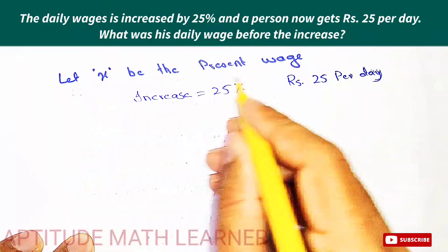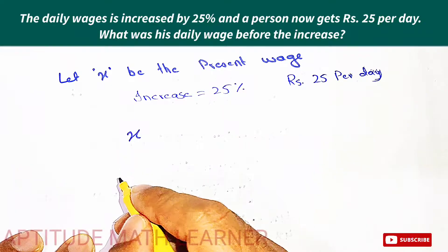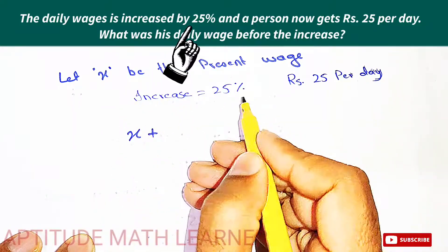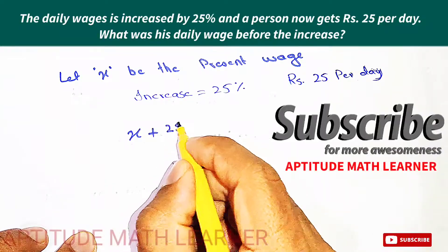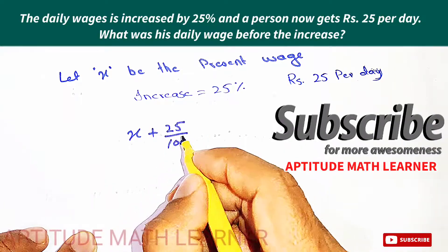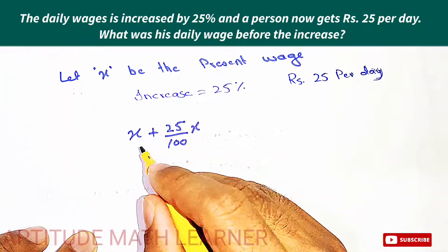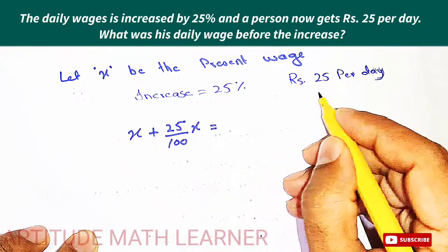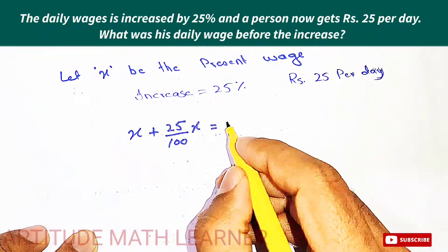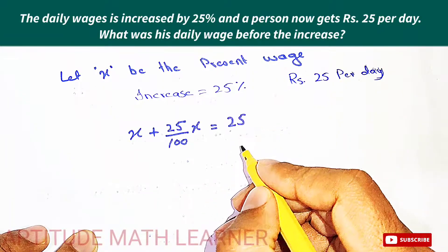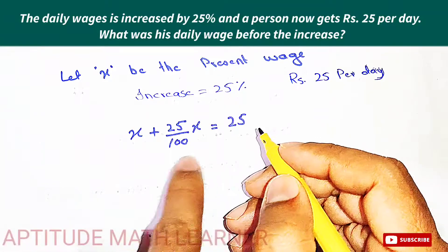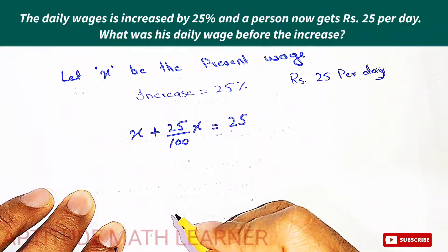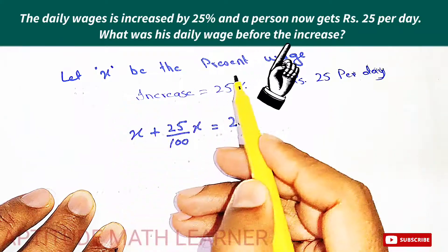So we set up the equation: x is the present wage, and we increase it by 25 percent, which is 25 divided by 100 of x. After the increase, the person gets rupees 25 per day. So the equation becomes: x plus 25 percent of x equals 25.